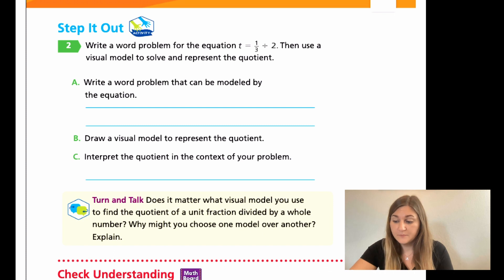So, for A, write a word problem. Then, for B, draw it out. And then, for C, interpret the quotient in the context of your problem. So, find the answer in your visual model in B. And then, just tell me what that meant in your word problem. All right. Go ahead and just do those couple questions. And then, come back and we'll work them through together. Go ahead and hit pause here.